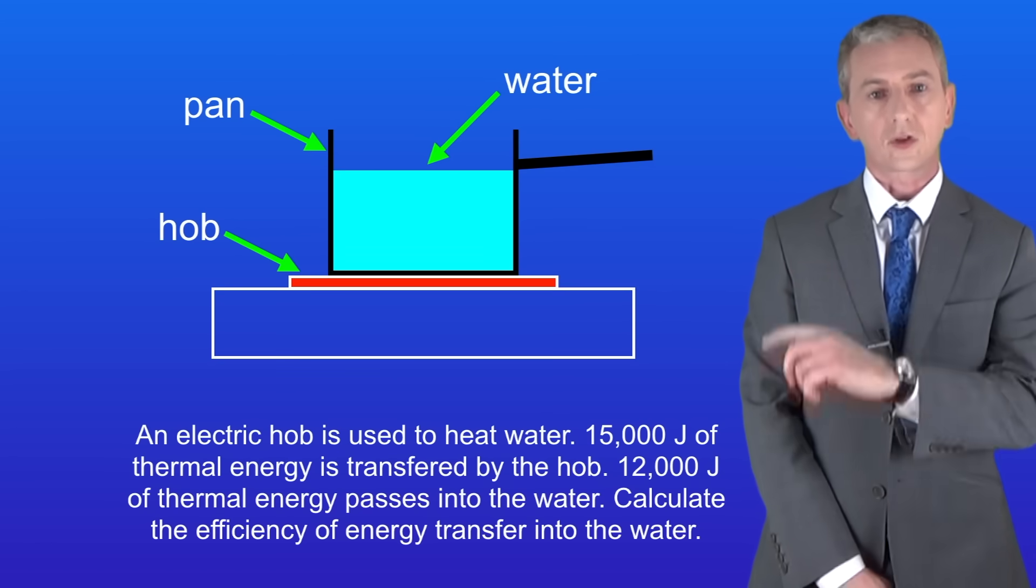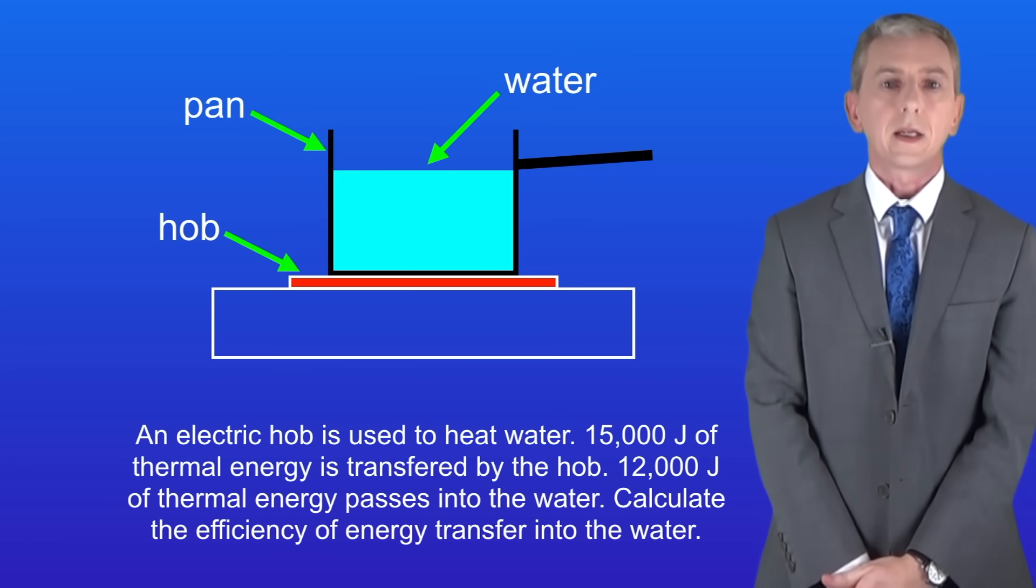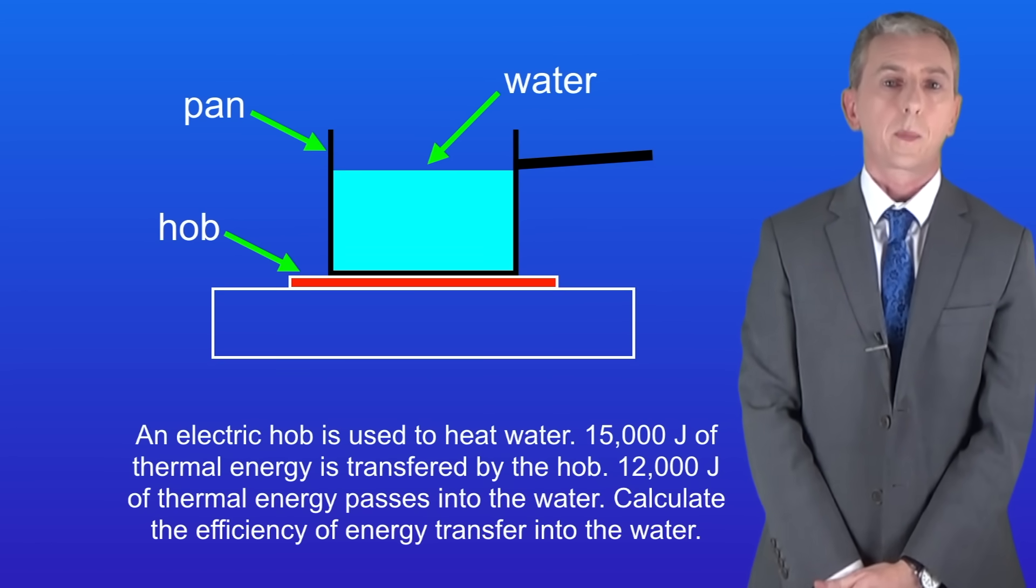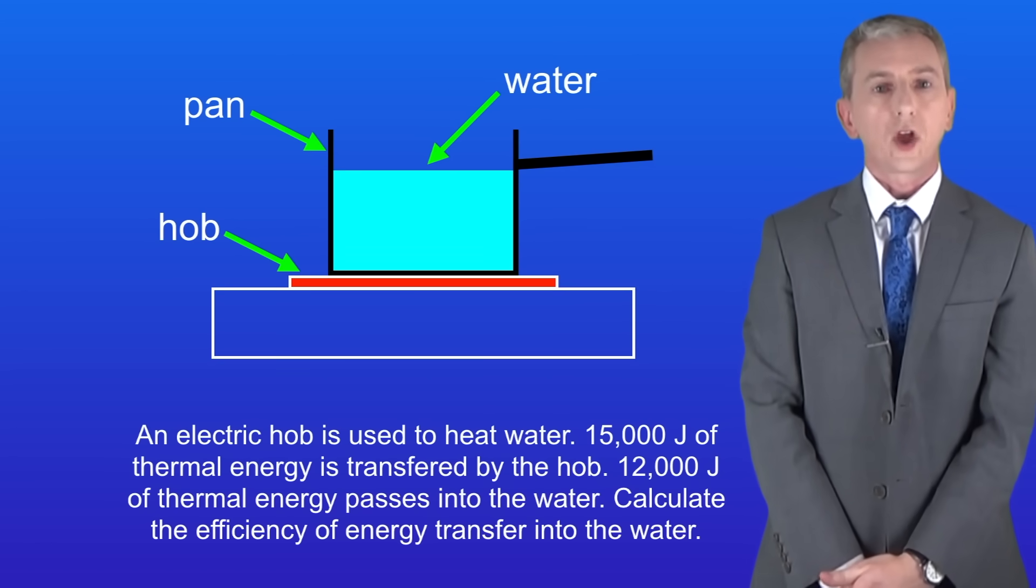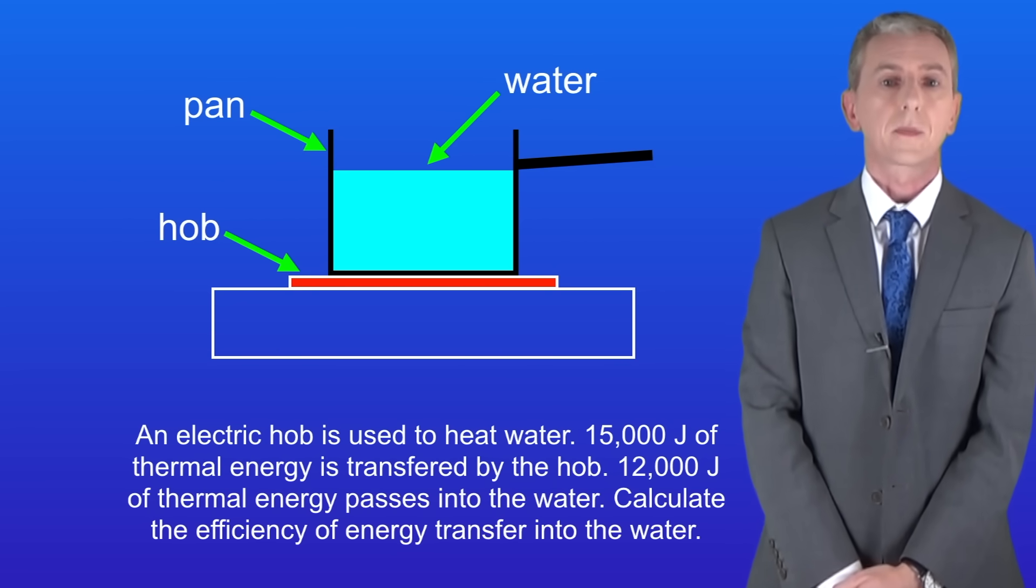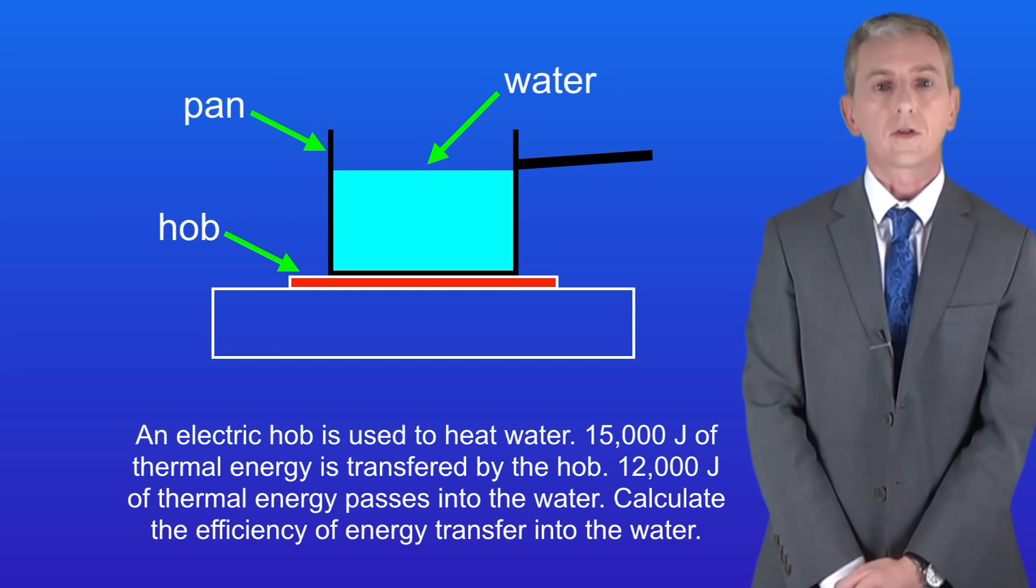Take a look at this question. An electric hob is used to heat water. 15,000 joules of thermal energy is transferred by the hob. 12,000 joules of thermal energy passes into the water. Calculate the efficiency of the energy transfer.